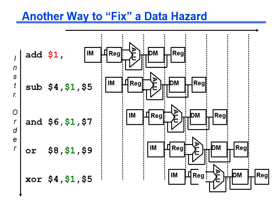A better solution takes advantage of the fact that the value to be written into the register file is already available in the pipeline at the end of the stage that produces it, so we can read that value from the interstage buffer to get the correct value without waiting to read the register file. This technique is called forwarding or bypass. Note that forwarding paths are valid only if the destination stage that receives the forwarded value occurs later in time than the source stage — you can't forward a result from the data memory stage of one instruction to the ALU stage of the next instruction because those two stages happen at the same time.